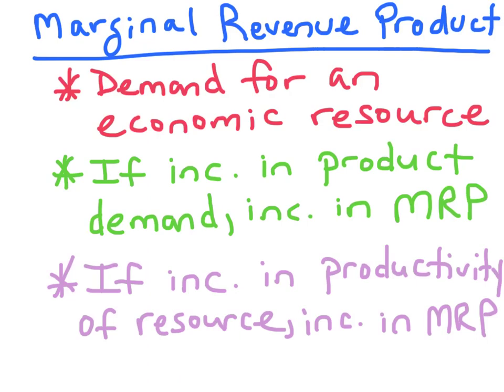Derived demand is the demand for an economic resource. If there's an increase in the productivity of an economic resource, there'll be an increase in the demand for that specific resource, or an increase in marginal revenue product.